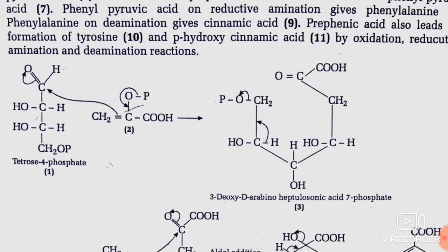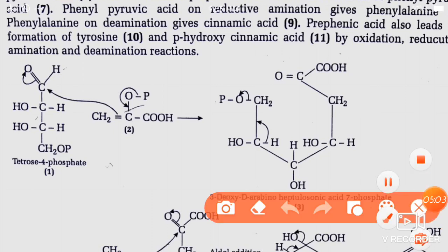The condensation of phosphoenol pyruvate with erythrose-4-phosphate — one type of carbohydrate — is what takes place. Here you can see the pi bond, carbonyl attack — after the pyruvate group this is totally bound up. This is the aldol condensation between tetrose and phosphoenol pyruvate.